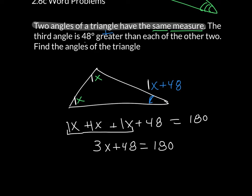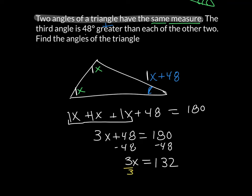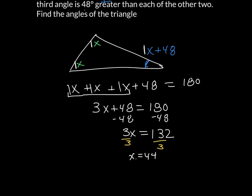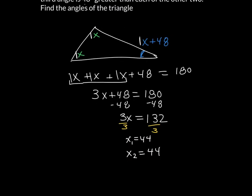Now I have to solve for X. I subtract 48 from both sides, giving me 3X is equal to 132. I divide both sides by 3, and that tells me X is equal to 44. Angle 1 is 44 degrees, and the second angle has the same value, so that's also 44. Both of those are the two smaller answers.